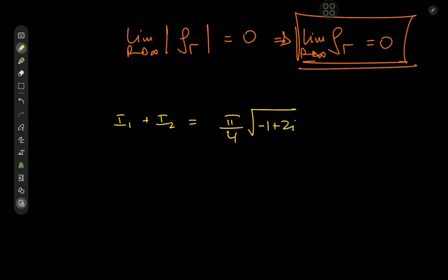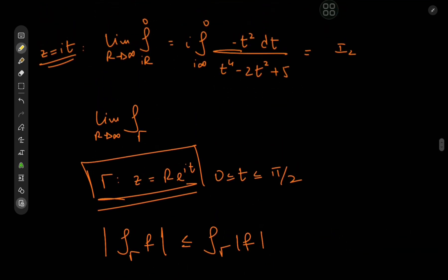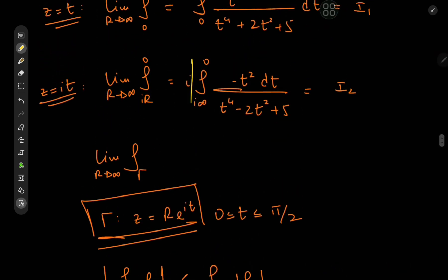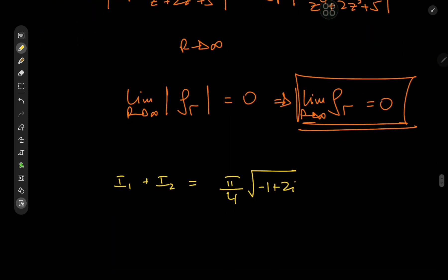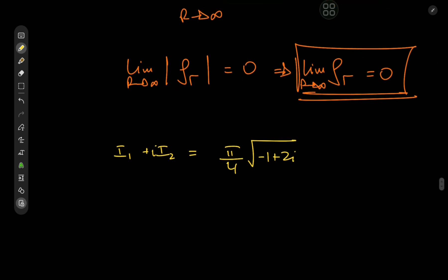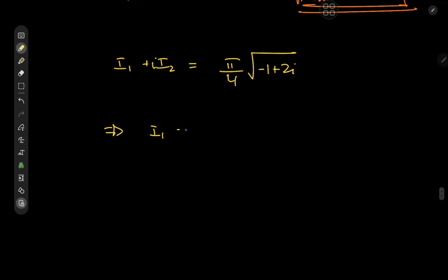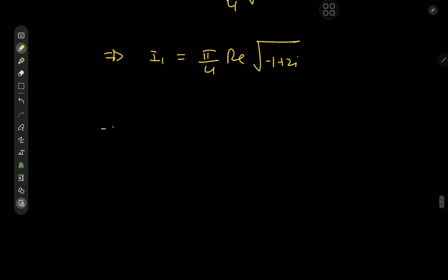With the arc integral vanishing, we have an equation involving I₁ and I₂. The integral I₂ is clearly real-valued since it involves t² and t⁴, so the right-hand side separates as I₁ + i·I₂ = π/4 × √(−1+2i). Therefore I₁ equals π/4 times the real part of √(−1+2i), which we now need to calculate.